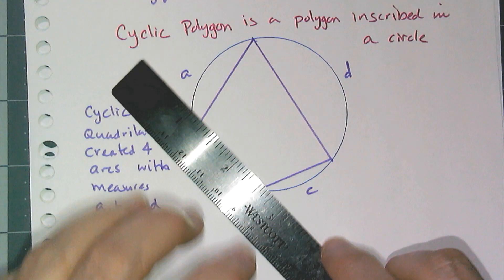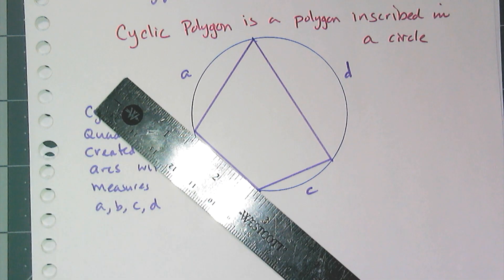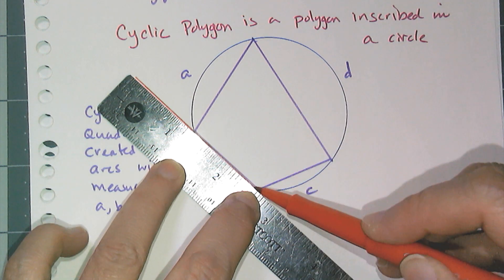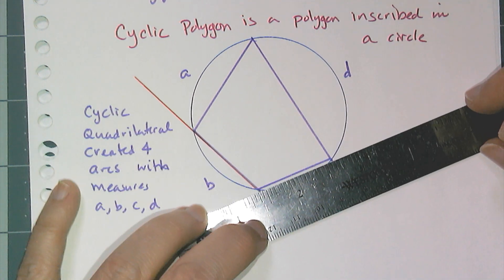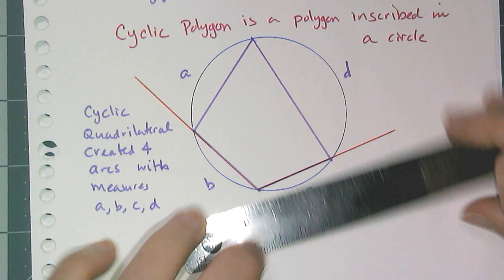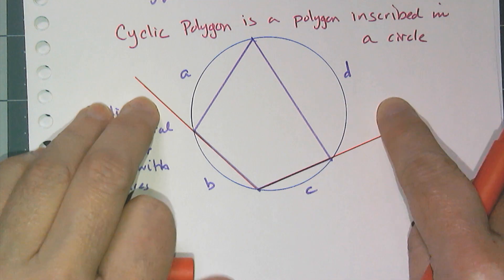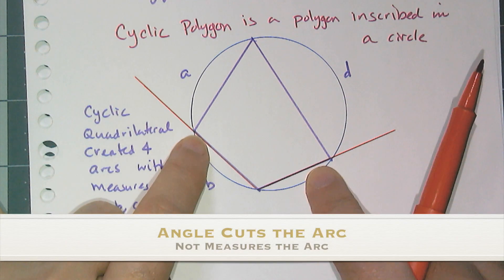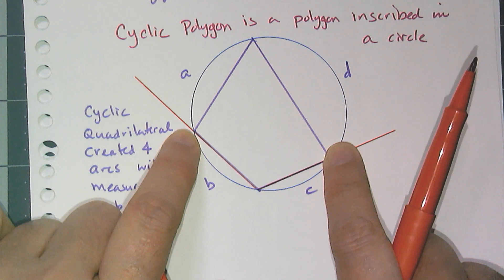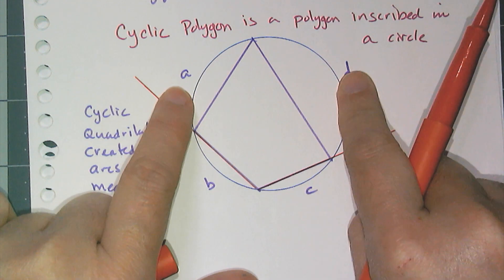And so if I extend this out to be like a secant instead of just a chord, you'll see that this angle here is an inscribed angle that measures this big old arc that has a measure of a plus d.